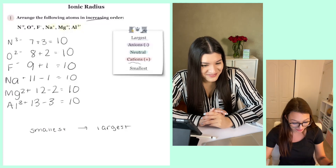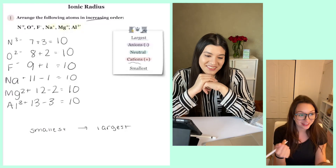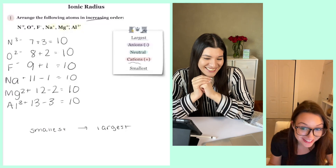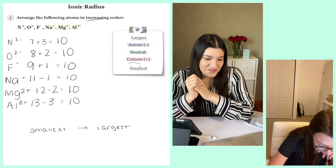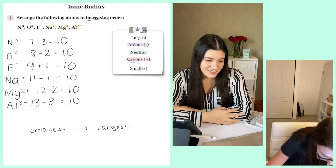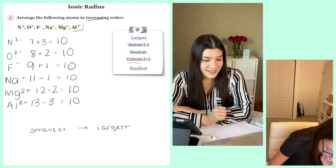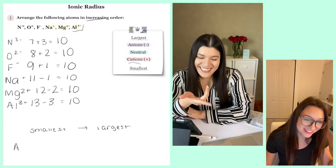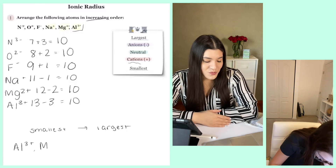My brain naturally thinks the opposite, so it's the opposite of what I think. I feel like this one would be the smallest. Correct. Why? Because it has the three plus, and that's the largest charge. It's opposite of what we would think. The larger the positive value, or the larger cation, would be the smallest.